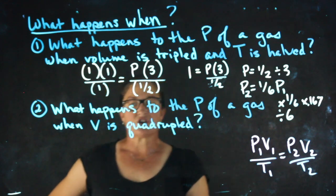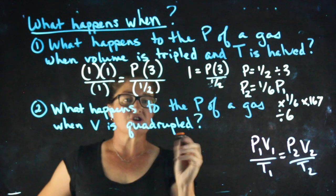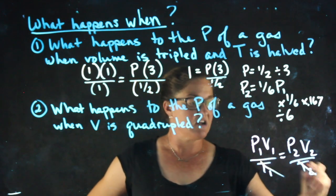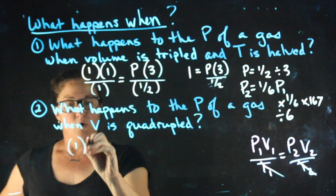A second example, what happens to the pressure if the volume does this? So now temperature is not mentioned, so we make the assumption that it's constant and I don't have to worry about it. For P1 and V1 I'm plugging in one.